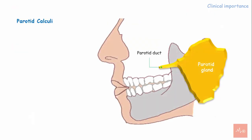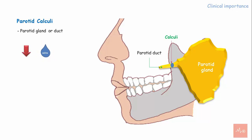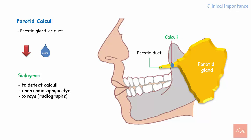Parotid calculi: sometimes stones or calculi may form in the parotid gland or the duct, reducing salivary secretions. Identification of the calculi is possible through a procedure called a sialogram, which uses a radiographic dye injected through the opening of the duct. The dye can be traced using radiographs and the location of the calculi can be assessed.